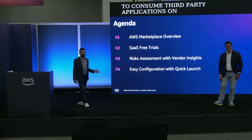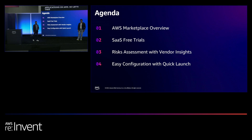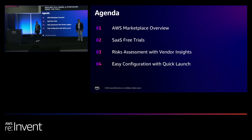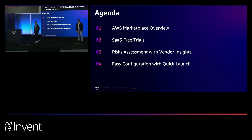So let's take a quick look at the agenda for today. We are going to provide a quick overview of AWS Marketplace. Then we will talk about SaaS free trials, how it can help you evaluate a product before you make a purchase. Next we will talk about Vendor Insights, a solution that helps you streamline vendor risk assessment, and finally we'll talk about Quick Launch, a recently announced feature which really simplifies how you deploy SaaS products in Marketplace.